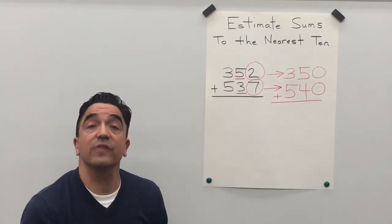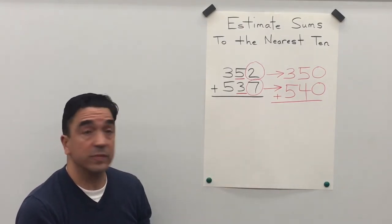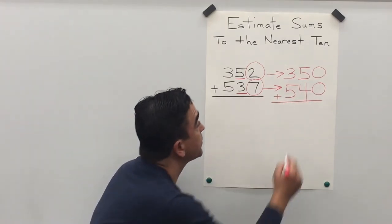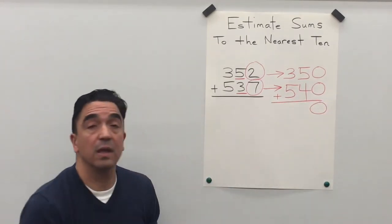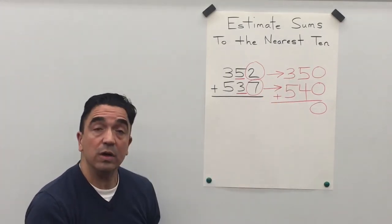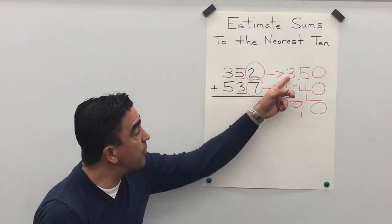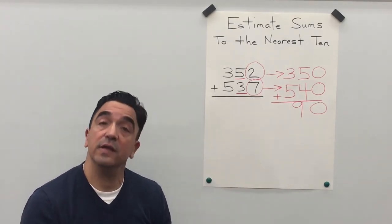Now we're going to do the second step in the process. We're going to add: zero plus zero is zero, five plus four is nine, three plus five is eight.